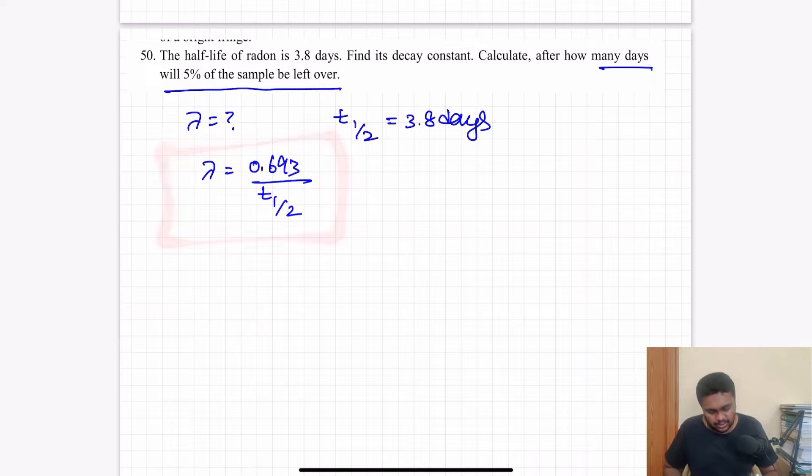Disintegration constant lambda is equal to 0.693 by t half. This is the basic formula. So this is 0.693 divided by 3.8. The answer is 0.182 disintegration per day.